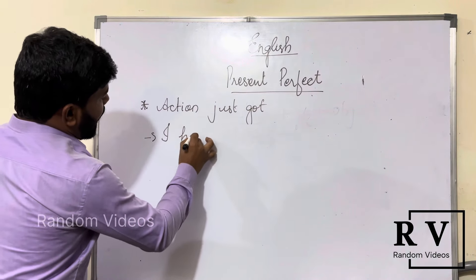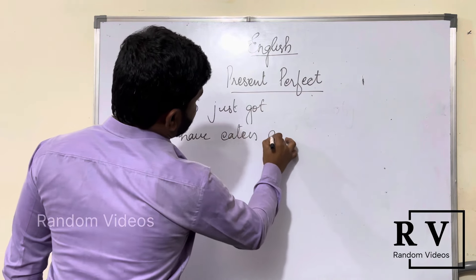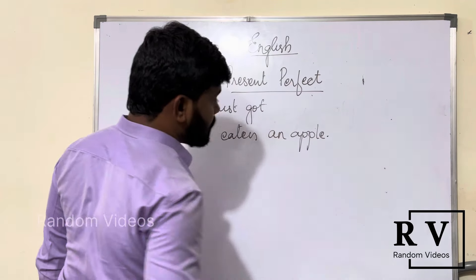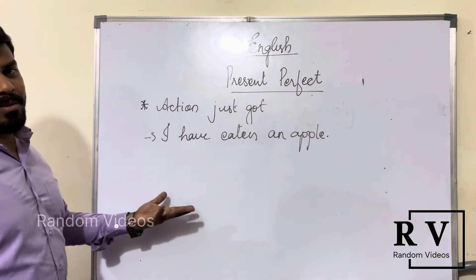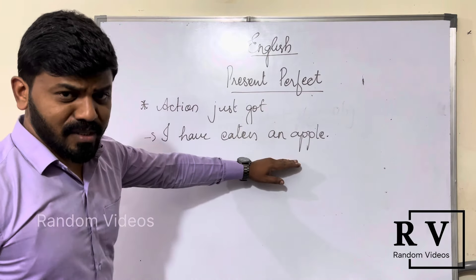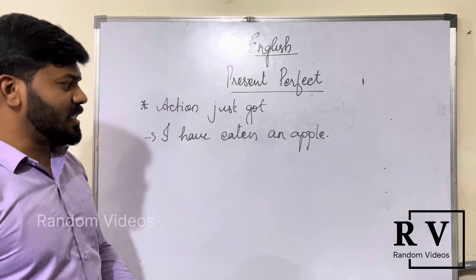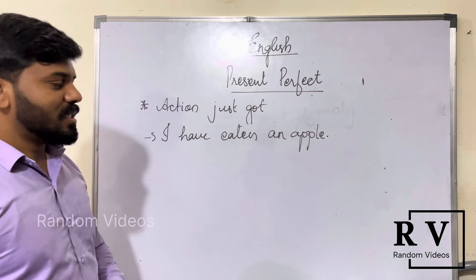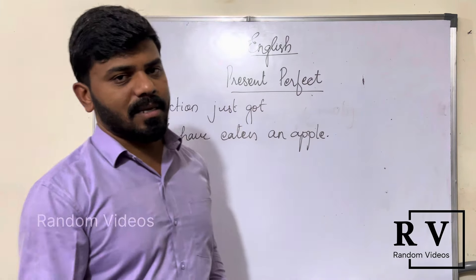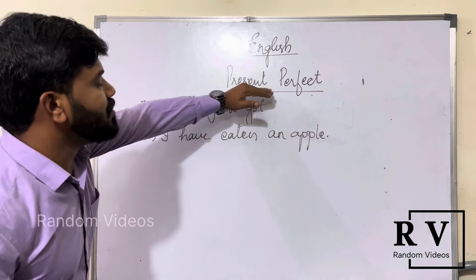For example: 'I have eaten an apple.' This actually means you ate it just now — you don't have to say 'I have just eaten an apple.' You simply say 'I have eaten an apple,' which implies the action happened just now. This is one instance where you can use present perfect tense.